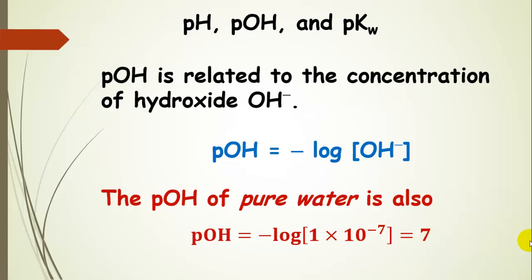pOH is very similar — it's related to the concentration of hydroxide in solution. We can get this value by taking the negative log of the hydroxide ion concentration. Similarly, the pOH for pure water is also 7.